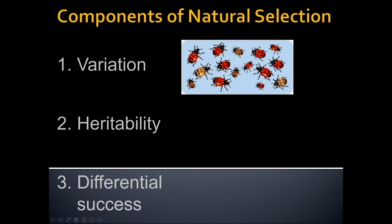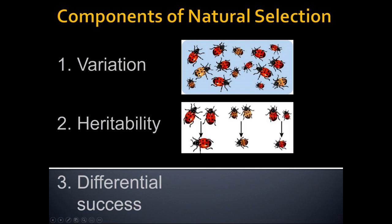Number two, whatever variety we're looking at needs to be inherited — it needs to be able to be passed down from one generation to the next. In Darwin's day, he didn't know exactly how that occurred. Today, we know that these are genes and the alleles for those genes that are passed down from one generation to the next.